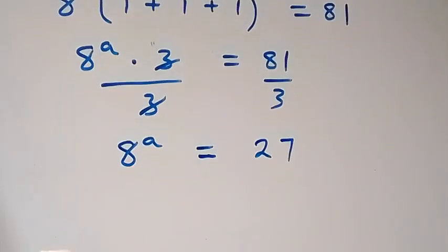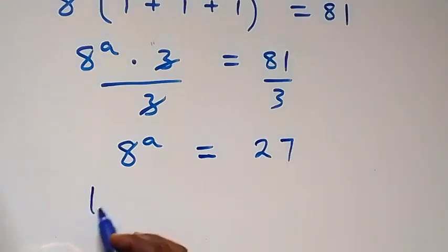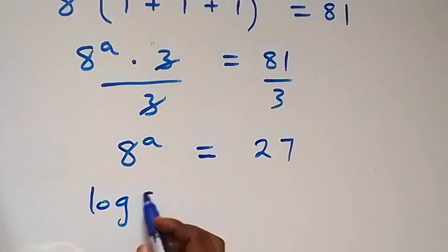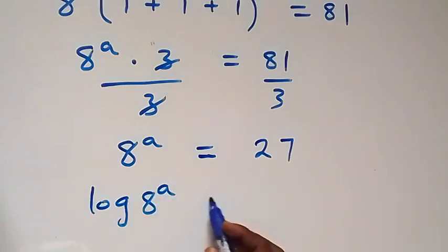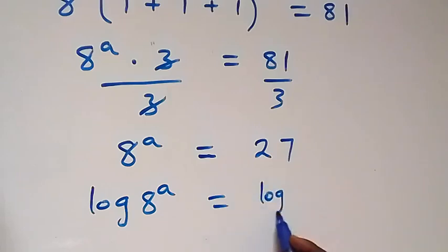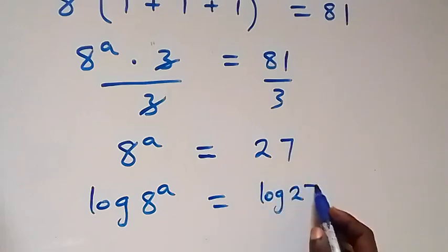The next step: from here we can take the log on both sides, then we have log 8 raised to power a equals log 27.